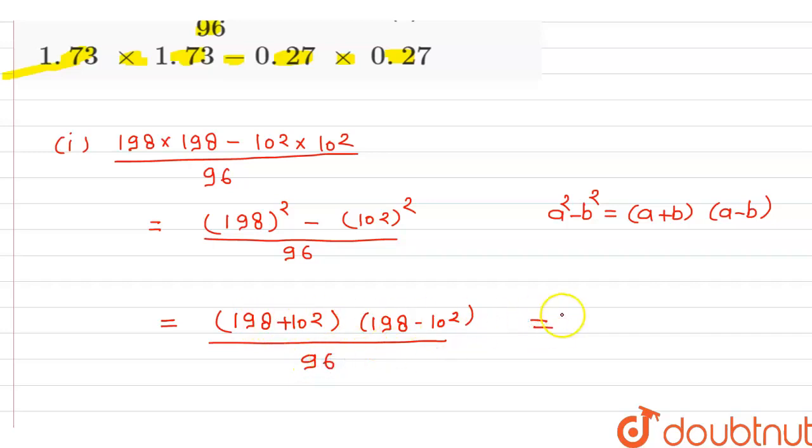So here it will be 300 and it will be 96 and divide by 96. So this will be cancelled out with this. So the final solution it will be 300.